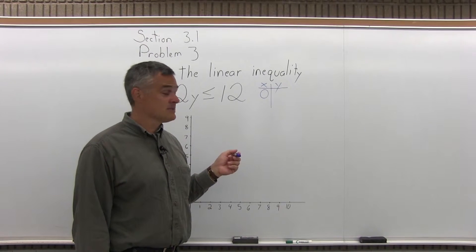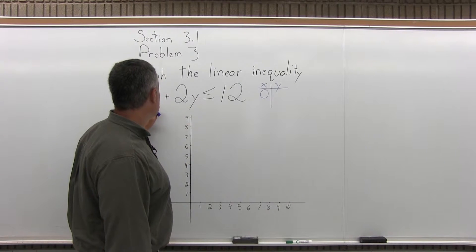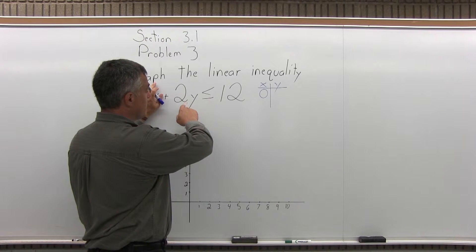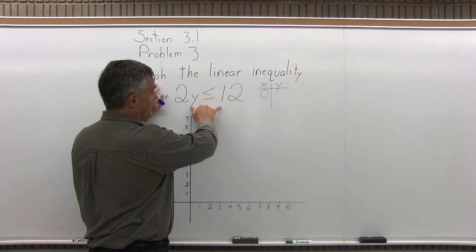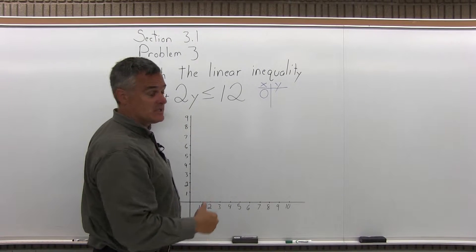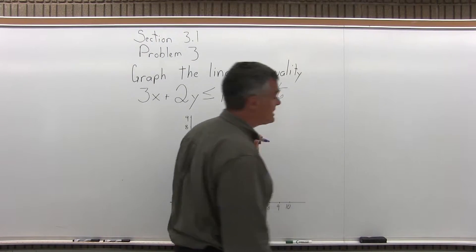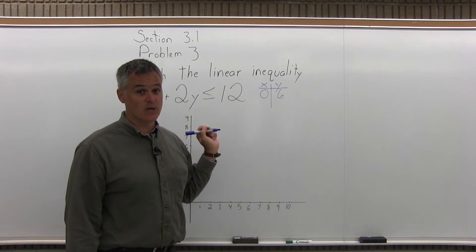So if x is zero, the 3x becomes 3 times zero and I'm pretending that it's an equation so I'd be left with 2y equals 12. So if 2y equals 12, the value of y must be 6. 2 times 6 would make 12 equals 12. So 0, 6 is one point that makes the inequality true if I pretend it's an equation.